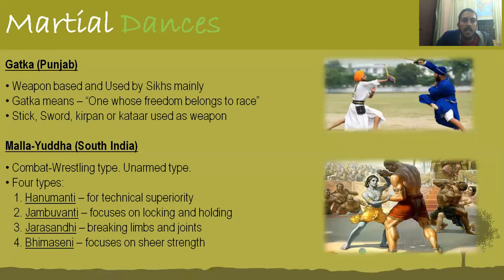Then you have Malyudh of South India — basically wrestling, as seen in the picture. Malyudh is very ancient, with mentions in epics like Ramayana and Mahabharata. There are four variants of Malyudh: Hanumati, Jambuvanti, Jarasandhi, and Bhimaseni.